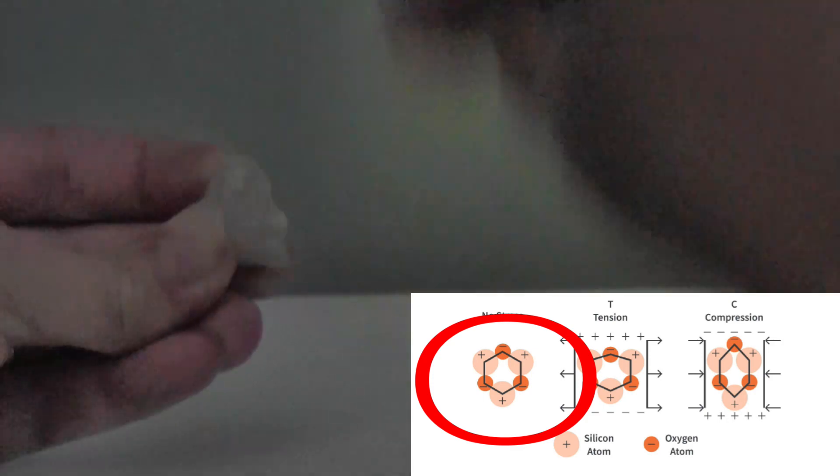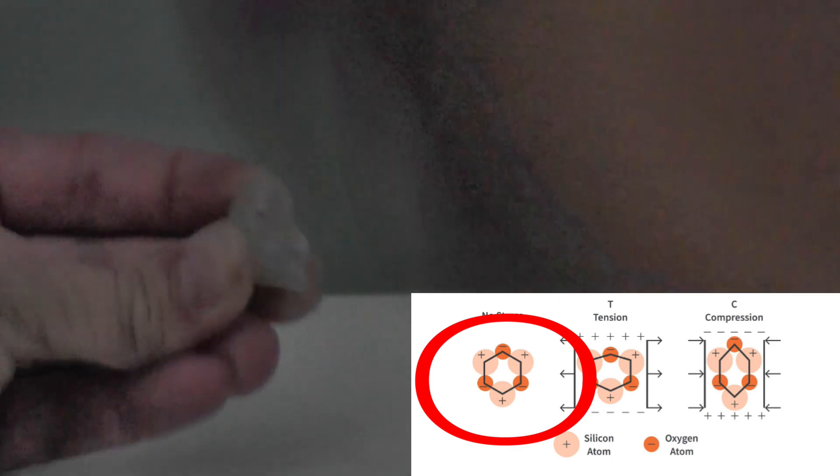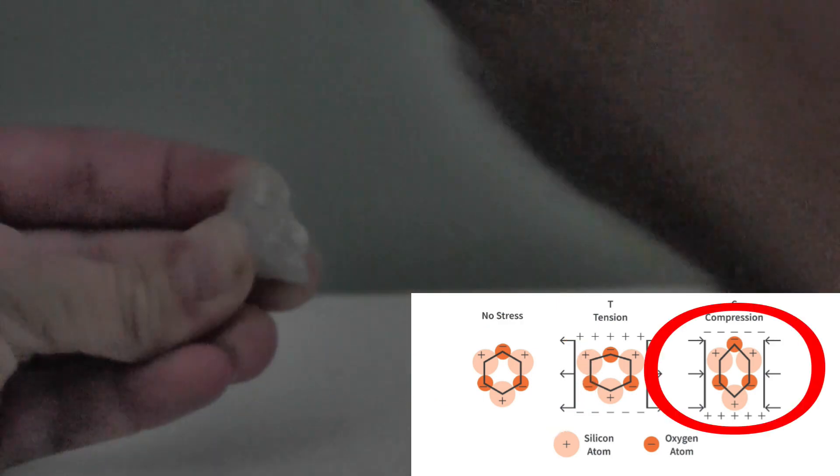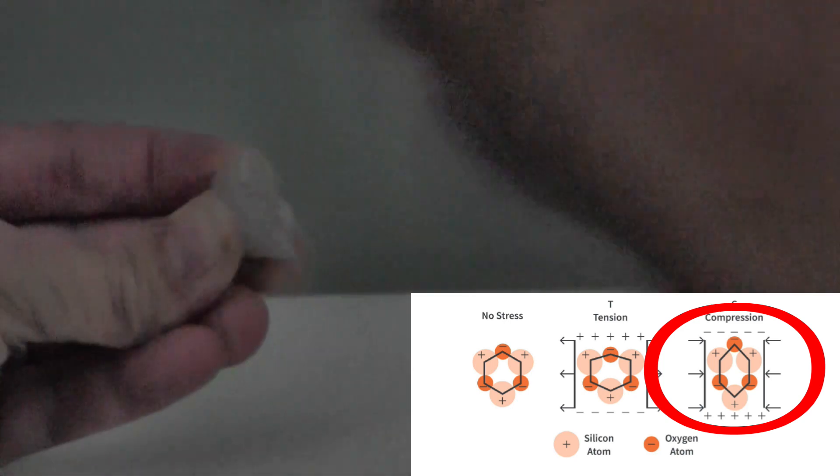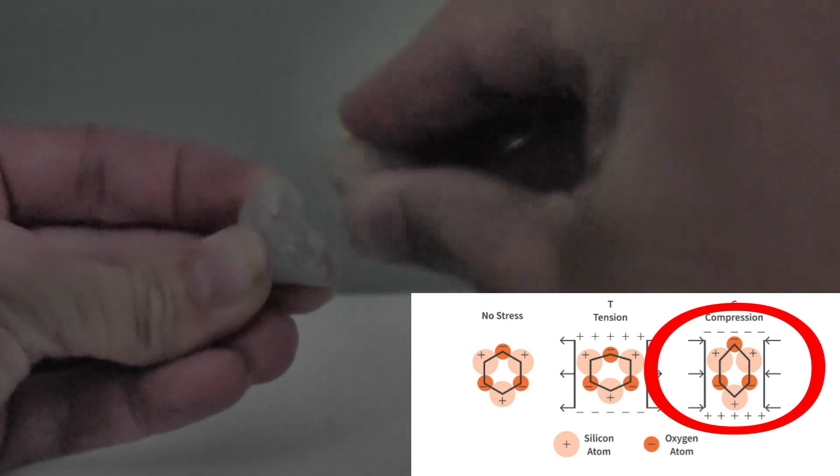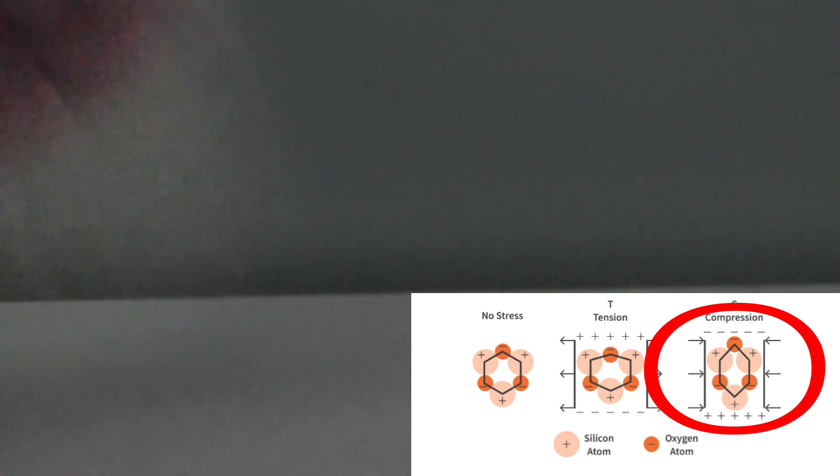A normal quartz crystal structure is in the shape of a hexagon, just like you see here on the left-hand side. However, when it's compressed, or for example, rubbing two quartz crystals together here causes compression, it creates an imbalance, thus creating an electrical discharge.